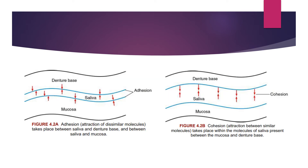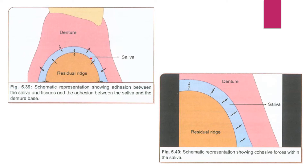This picture shows the difference between adhesion and cohesion. Adhesion is the attraction of dissimilar molecules, taking place between the saliva and the denture base as well as between saliva and the mucosa. Cohesion is the attraction between similar or like molecules, taking place between the molecules of saliva present between the mucosa and the denture base. Here is a schematic representation showing adhesion between the saliva and tissues and between the saliva and the denture base, as well as the cohesive forces within the saliva itself.